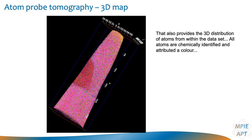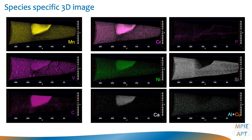The final result is a three-dimensional point cloud where every point has a color corresponding to the element. For example, for a piece of industrial steel analyzed more than 10 years ago, we can look at where all the different elements are distributed within the small volume analyzed — about 100 nanometers lateral field of view and a few hundreds of nanometers in depth. We can see a large carbide in the middle of the dataset located at a grain boundary, and features in the distribution of vanadium corresponding to segregation to crystalline defects, dislocations, and the grain boundary itself.